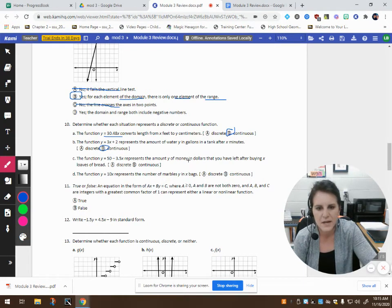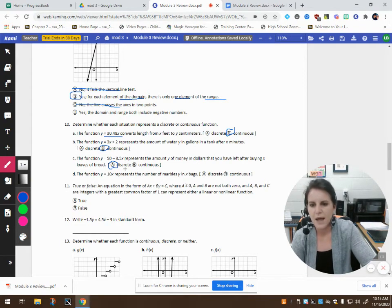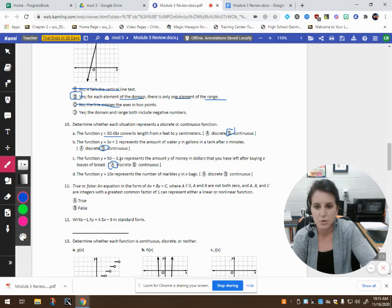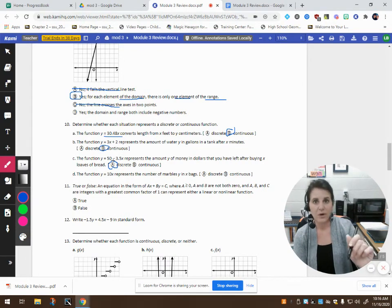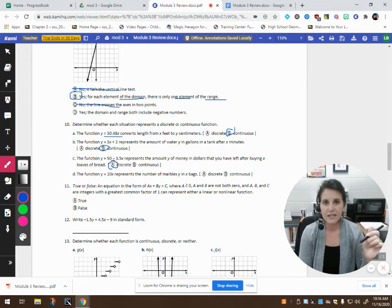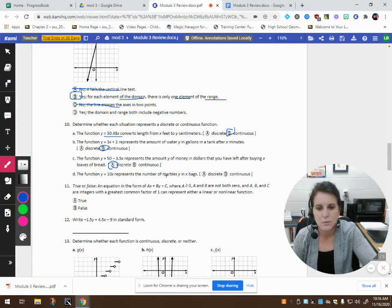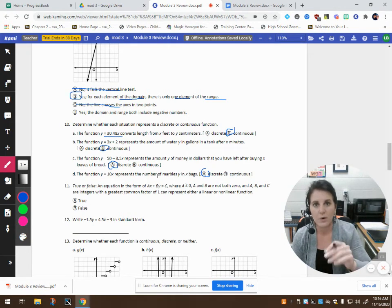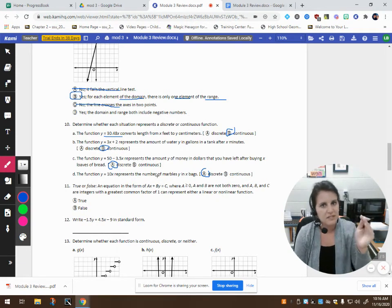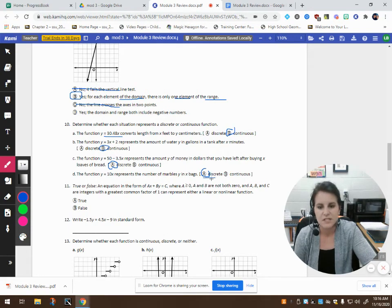Okay, this says the amount of money in dollars that you have left after buying x loaves of bread. Well, of course, this is going to be discrete because if each loaf of bread costs $3.50 and you only had $50 to begin with. So, I'm going to have one loaf of bread is $3.50. Two loaves of bread is $7. Three loaves of bread. I can't buy part of a loaf of bread. So, of course, this one is discrete. And the function that represents marbles in a bag. Of course, this is, again, going to be discrete because I can only take out one marble at a time. I can't take out part of a marble to show those fractional pieces in between. So, this has to be a discrete function.